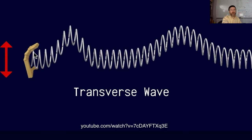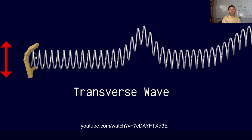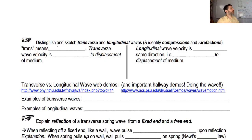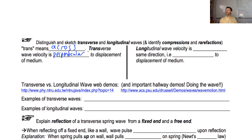This is why we call this type of wave a transverse wave. 'Trans' means across — just like a transcontinental railroad or a transatlantic flight. So transverse wave velocity is perpendicular to the displacement of the medium. If you're moving the medium up and down and the wave propagates to the right, you've got a transverse wave.